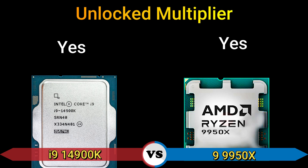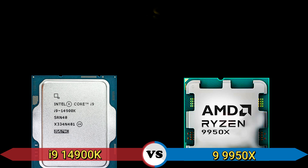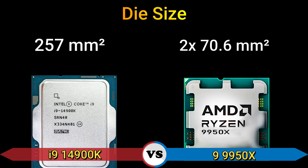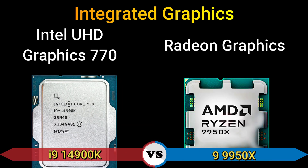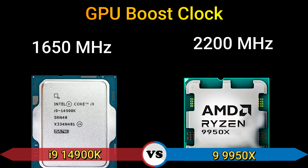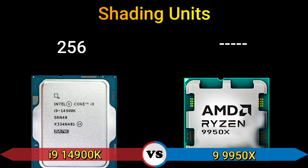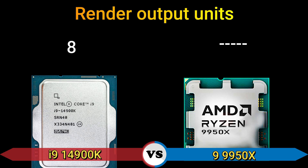Unlocked multiplier: yes. Processor size: 10 nanometer and 4 nanometer. Die size: 257 mm² and 2×70.6 mm². Part 3 — iGPU: Intel UHD Graphics 770 and Radeon graphics. GPU base clock: 300 MHz. GPU boost clock: 1650 MHz and 2200 MHz. Shading units: 6.6 and 2.6. Texture mapping units: 256. Render output units: 16 and 8. Execution units: 32.